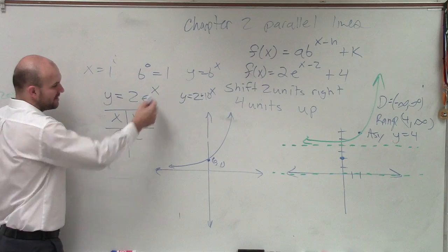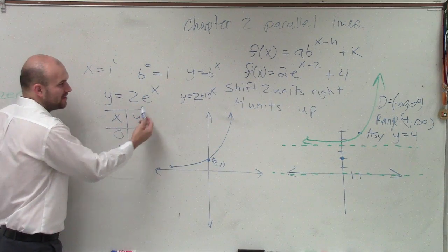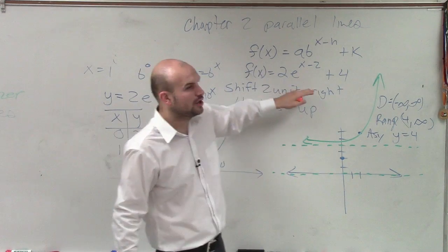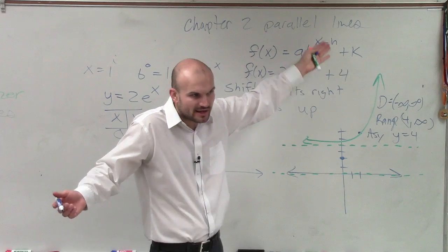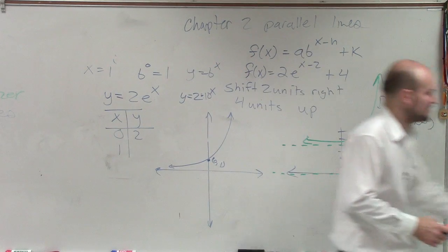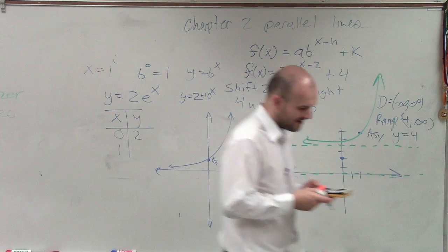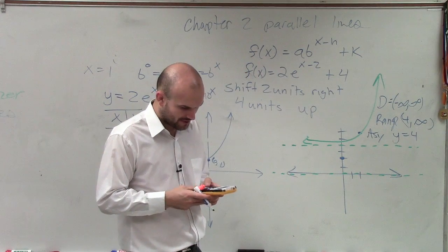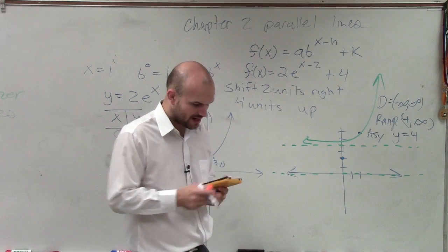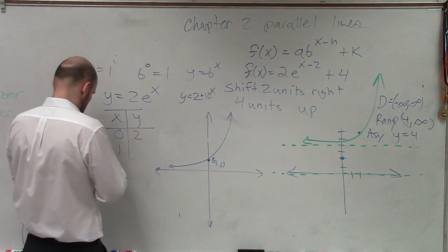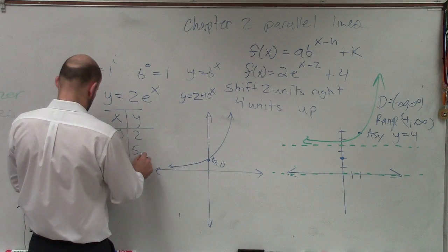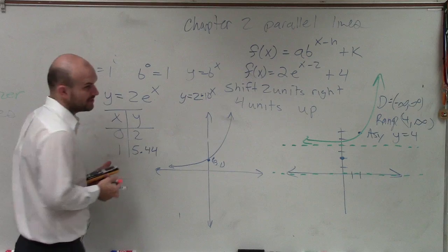If I pick 1, well e to the 1 is e, 2 times e is an irrational number, and then you're going to have to shift that number up 4. But yeah, you can do that though. Let's go ahead and take a look at that. What if I did e raised to the first power times 2, I get 5.43, let's do 5.44, that's rounded.